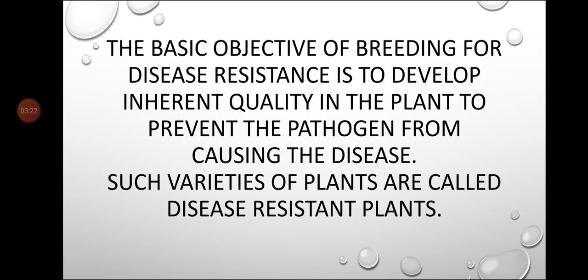The basic objective of breeding for disease resistance is to develop inherent quality in plants to prevent them from those diseases. When the plants are made disease-free through plant breeding techniques, those plants are called disease resistant plants. Such plants get resistance power and will never be diseased again.